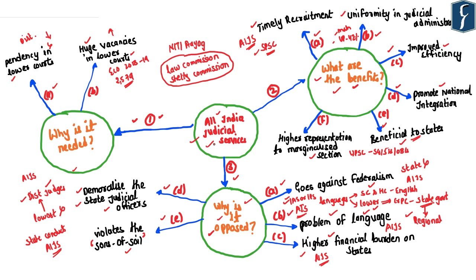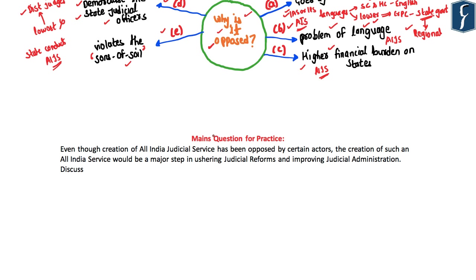These are some of the important aspects one should know with respect to this particular article. Based upon this video analysis, a main question for your practice could be: 'Even though the creation of All India Judicial Service has been opposed by certain actors, the creation of such an All India Service would be a major step in assuring judicial reforms and improving judicial administration.'